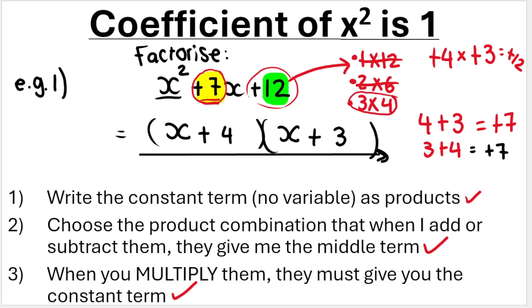Another common question I get asked often from students is: does it matter which way we write the brackets? No — your answer could also be (x + 3)(x + 4), as long as the 4 has a plus next to it and the 3 has a plus next to it.